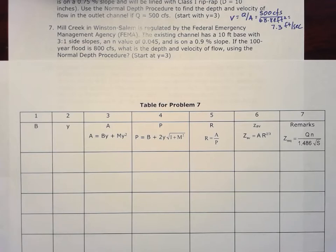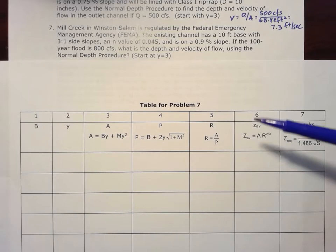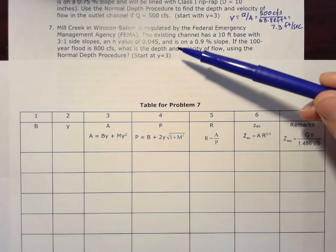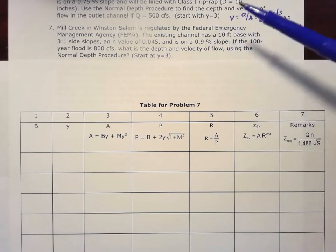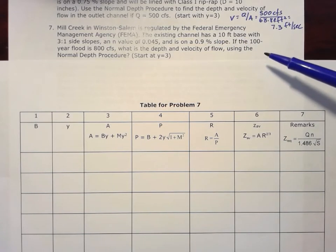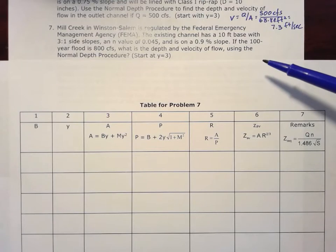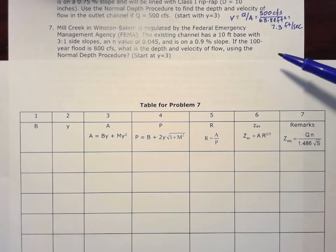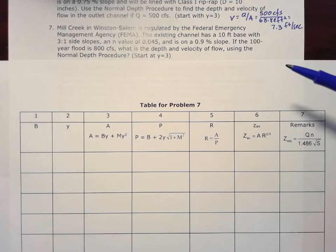Alright, problem seven of the Hydraulics Chapter 4 homework is another normal depth procedure problem. We have Mill Creek in Winston-Salem that's regulated by FEMA. The existing channel has a 10-foot base with 3 to 1 side slopes, an N value of 0.045, and it's on a 0.9% slope. If the 100-year flood is 800 cubic feet per second, what is the depth and velocity of flow using the normal depth procedure?